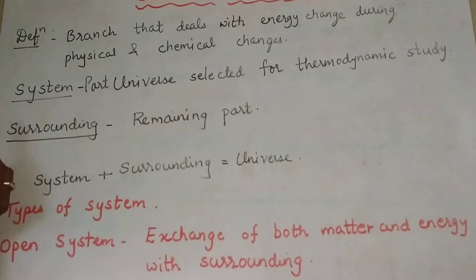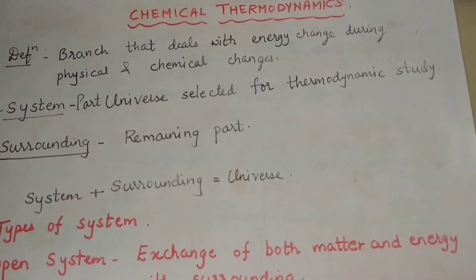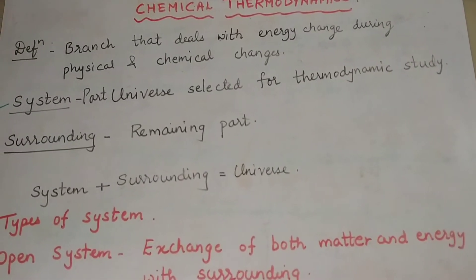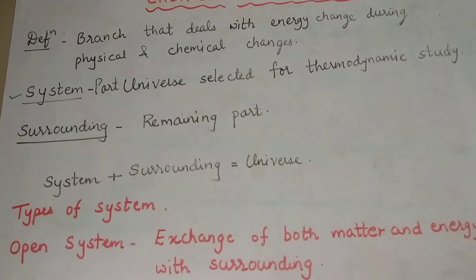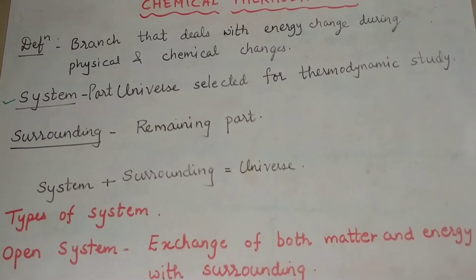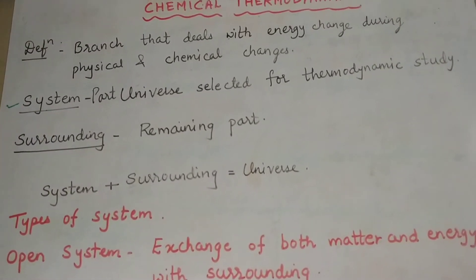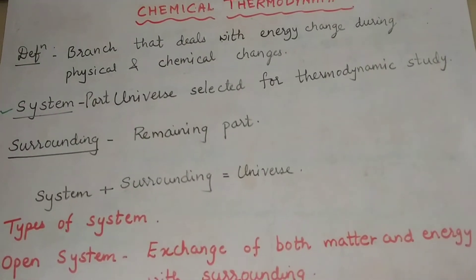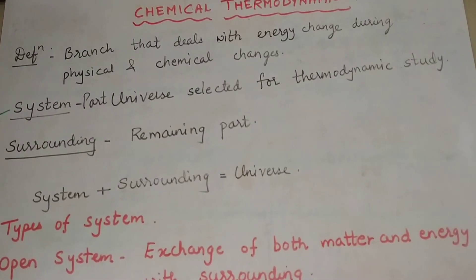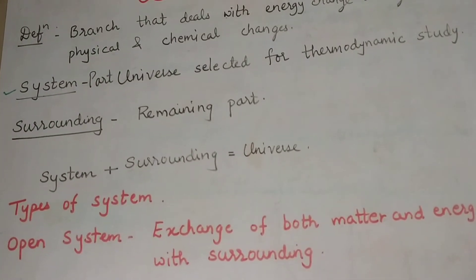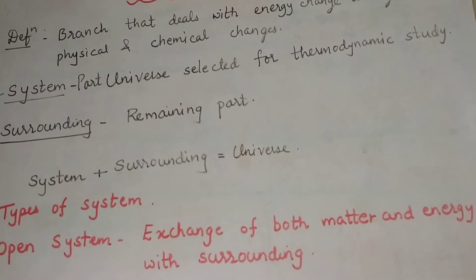The first term we must know is 'system'. A system is defined as the part of the universe which is selected for thermodynamic study. For example, if in the lab I am heating water in a beaker, that beaker becomes the system because I am bringing about a change in energy. Similarly, if I am carrying out a reaction in a test tube, that test tube becomes the system.